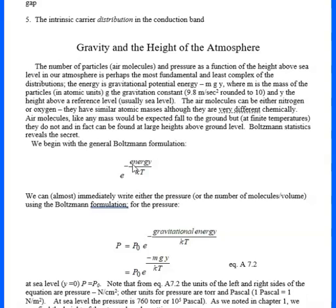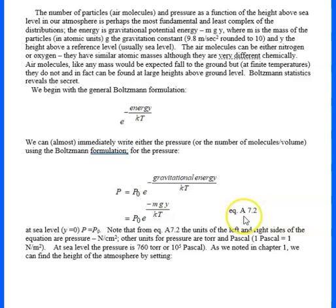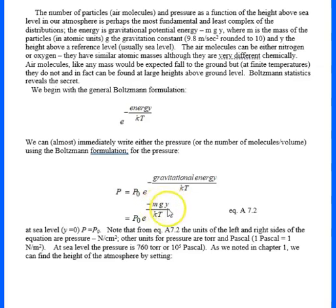The energy here is gravitational energy, as indicated in equation A7.2. We can write pressure as equal to some ground state pressure P0 multiplied by the Boltzmann factor e to the negative Mgy over kT. The gravitational energy is Mgy, where M is mass, g is gravitational acceleration, and y is height. The units of Mgy are joules — force times distance is energy. This Boltzmann term is always unitless, so on both sides the units are newtons per square meter, which are the units of pressure.